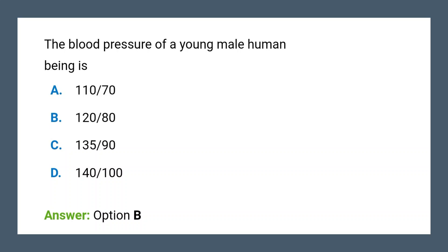What is the meaning of 120 by 80? 120 means systolic blood pressure — that is the pressure exerted when blood is ejected into the arteries. And 80 means diastolic blood pressure — that is the pressure blood exerts within the arteries between heartbeats.